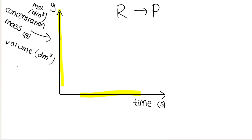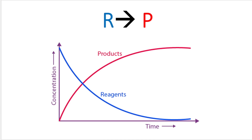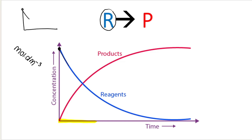Looking at our first graph, we have time along the x-axis and concentration — usually measured in moles per cubic decimeter — along the y-axis. We start off with a certain concentration of reactants, and as the reaction goes on, the concentration of those reactants decreases because the reactants get used up. If we are speaking about the limiting reagent — the reactant that runs out first — then the graph starts somewhere up here and runs until there's no more left, until concentration is zero.